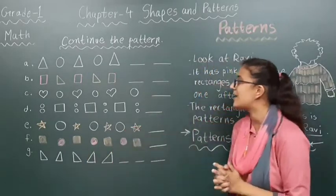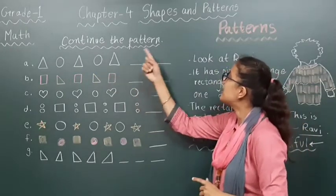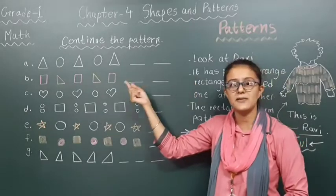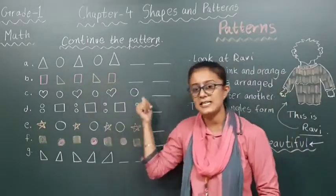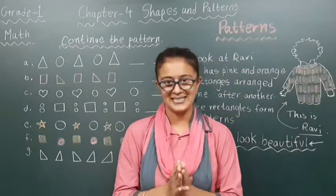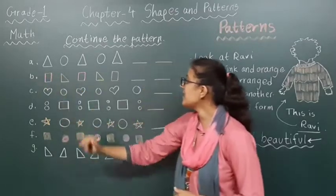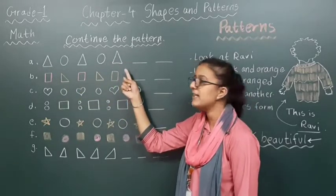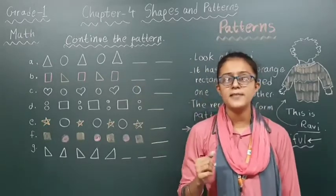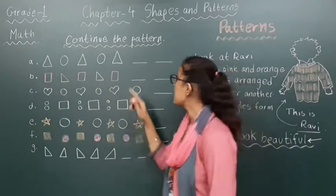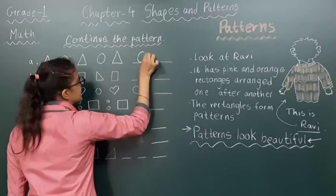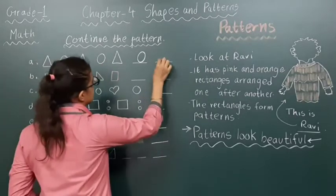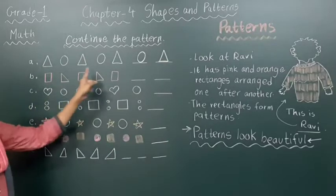Now let's quickly move towards our exercise: continue the pattern. When a pattern is given to you, you have to complete it — some blanks are given and we have to fill in the particular shape. Starting with A: there is one triangle, then a circle, then a triangle, then a circle, then again a triangle. Which shape will come next? Yes — a circle, because after the triangle it is a circle. And after the circle, a triangle. The full pattern is completed.